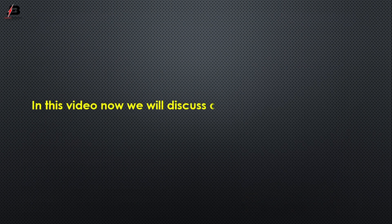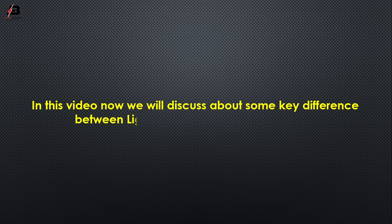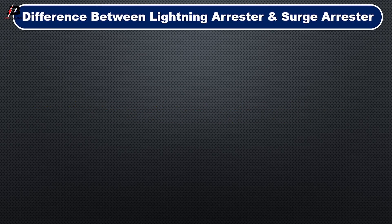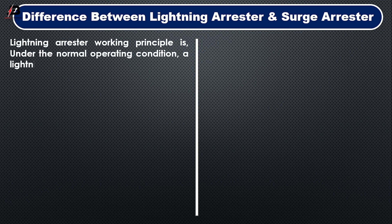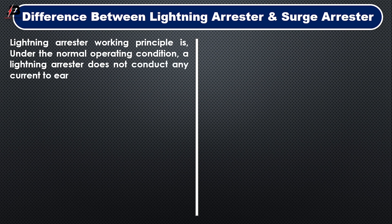Now we will discuss some key differences between lightning arrester and surge arrester. Regarding the lightning arrester working principle: under normal operating conditions, a lightning arrester does not conduct any current to earth.